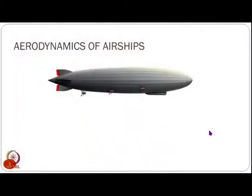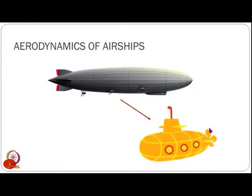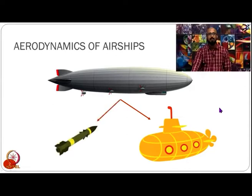As I mentioned in the previous talk on the dynamics of airship, the dynamics of airships are primarily derived from submarines because they are buoyant vehicles as well. A lot of hydrodynamics of submarines is similar to the aerodynamics of airships. In case of aerodynamics, we also consider a little bit of missile aerodynamics here.